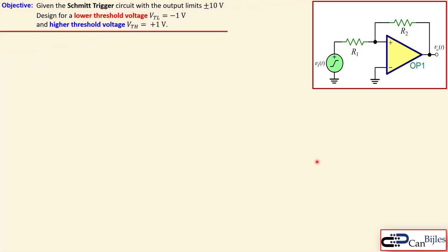Let's look at our design example. We have this Schmitt trigger circuit in the positive feedback configuration as a non-inverting Schmitt trigger. We will have an output limit of plus and minus 10 volts, so the output will be maximum 10 or minimum minus 10 volts. We need to determine the values of R1 and R2 such that the lower threshold voltage is minus 1 volt and the higher threshold voltage is plus 1 volt.